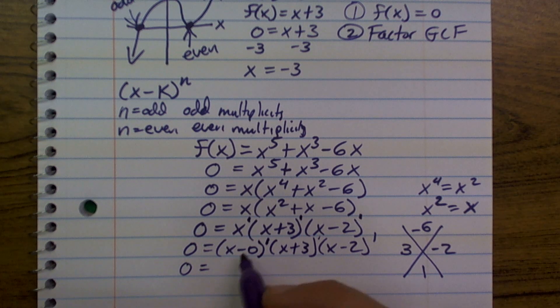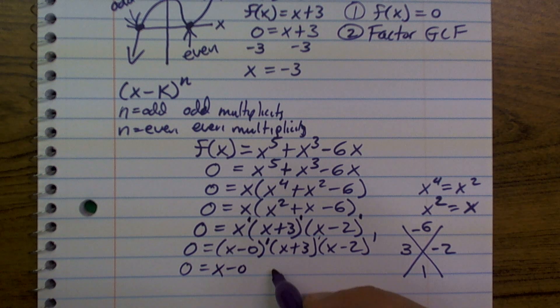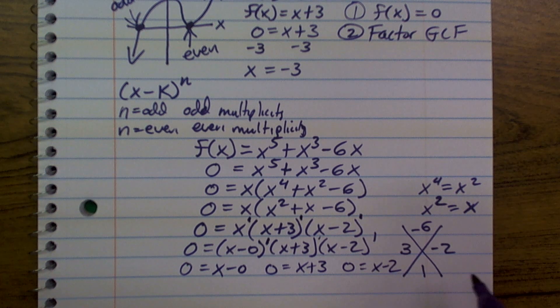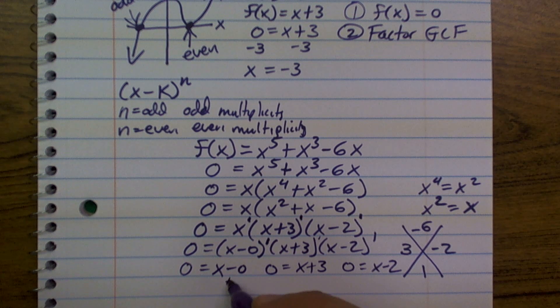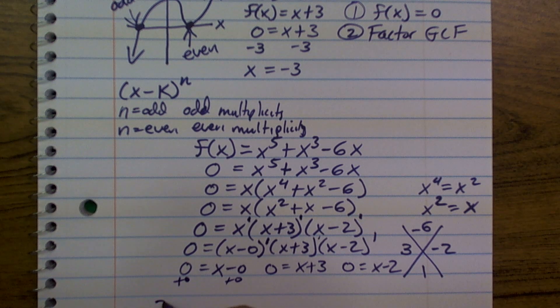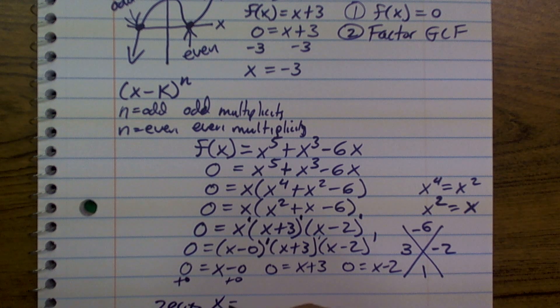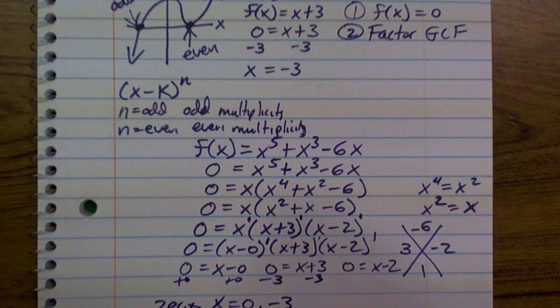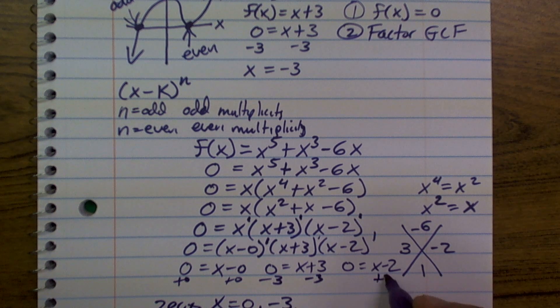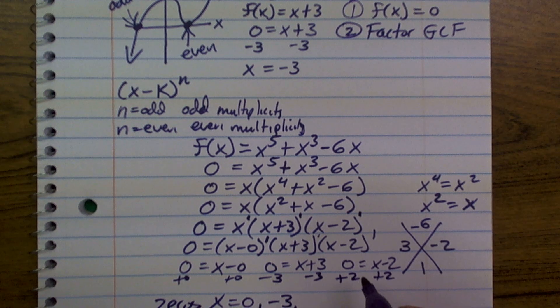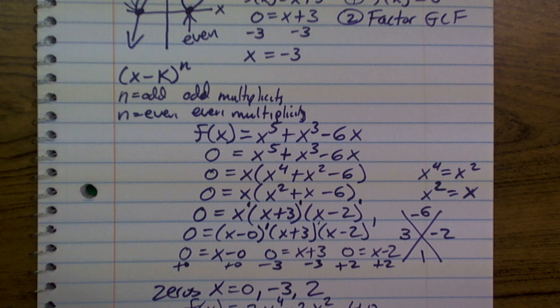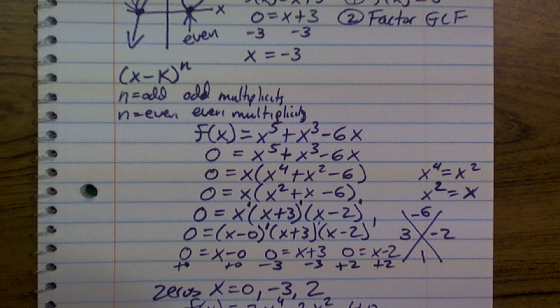now you can set each one of these equal to 0. So, 0 equals x minus 0, 0 equals x plus 3, and 0 equals x minus 2. Now, solving for 0, my zeros are going to be x equals 0, subtract 3 on both sides, x equals negative 3. And, when I add a 2 to both sides, I will have x equals 2. So, therefore, my three zeros are x equals 0, negative 3, and 2.